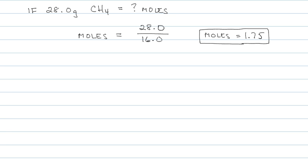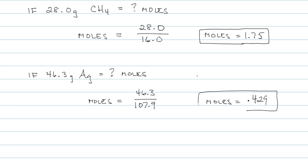So try this one on your own, pause the video, and then come back. If there are 46.3 grams of silver, that will equal how many moles of silver. Moles is equal to given mass, 46.3. We look up silver. To the tenths place, 107.9. So moles is equal to 0.429. Make sure you do the math yourself.